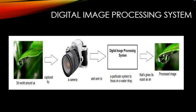First we have to understand what is a digital image processing system. A digital image processing system is used to process the image. For this we use a camera to capture the image, then send it to the digital image processing system. These systems use algorithms to manipulate the image, and in the end we get a processed image.